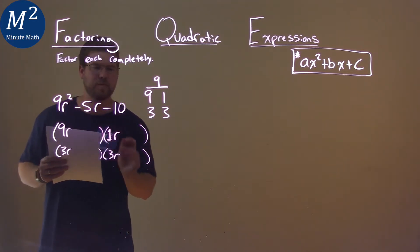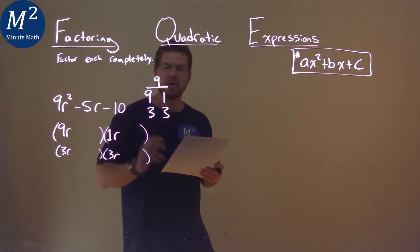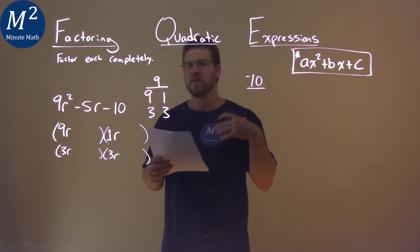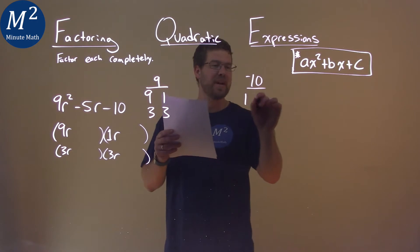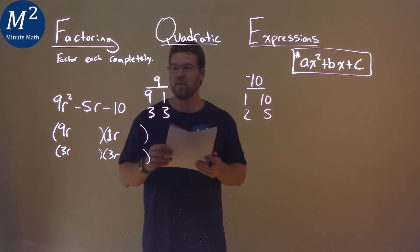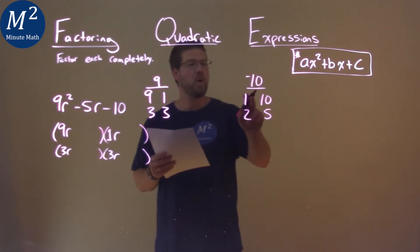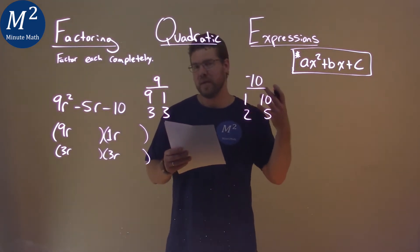Now, our c value being -10, two numbers that multiply to be 10 are 1 and 10, and 2 and 5. We know, with our b value being negative and our c value being negative, one of these values must also be negative.